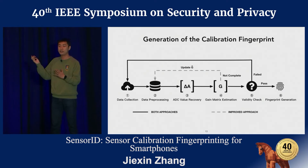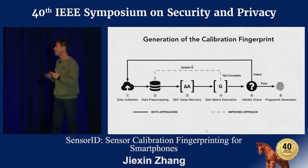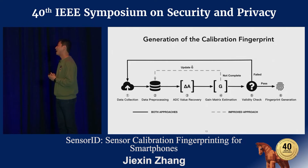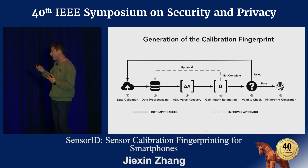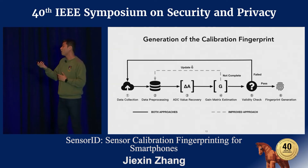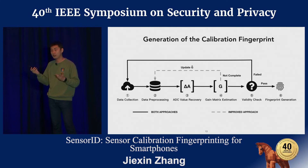This diagram illustrates the major steps to recover the value of the gain matrix and to further generate the calibration fingerprint. The calibration fingerprint is another representation of the gain matrix based on the device model, since different device models use different representations of this gain matrix. Once we have the value of delta A and we know delta O, linear algebra allows us to estimate the gain matrix G. In practice, we found that only around 100 data samples are needed, which can be collected within one second. We also have an improved approach that ensures that even if the device is under intense movement — for example, if you're shaking your device — the algorithm can still generate the fingerprint quickly and reliably.